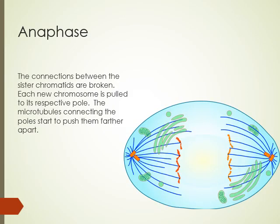Next up is anaphase. 'Ana' means without. Here, the two sister chromatids are pulled apart from each other — the chromosomes are ripped apart and pulled to either end of the cell. You start with a chromosome that doubled into two sister chromatids; the microtubule rips them apart. It's important to note that at this stage you have individual chromosomes again — these are no longer called chromatids, they're called chromosomes.